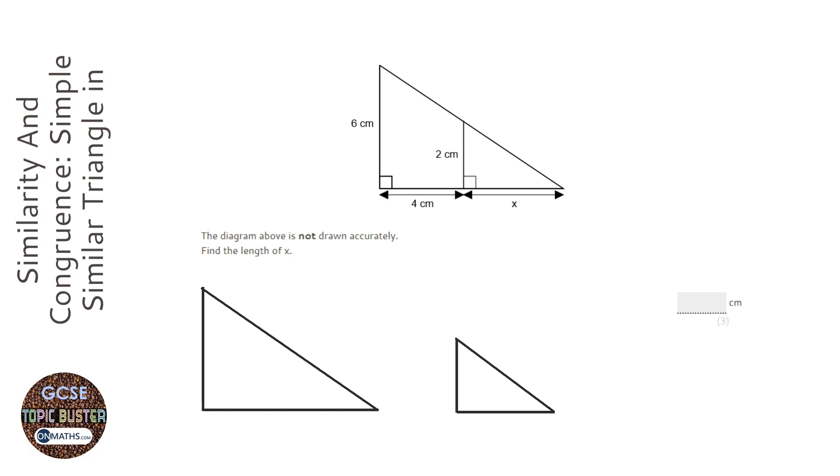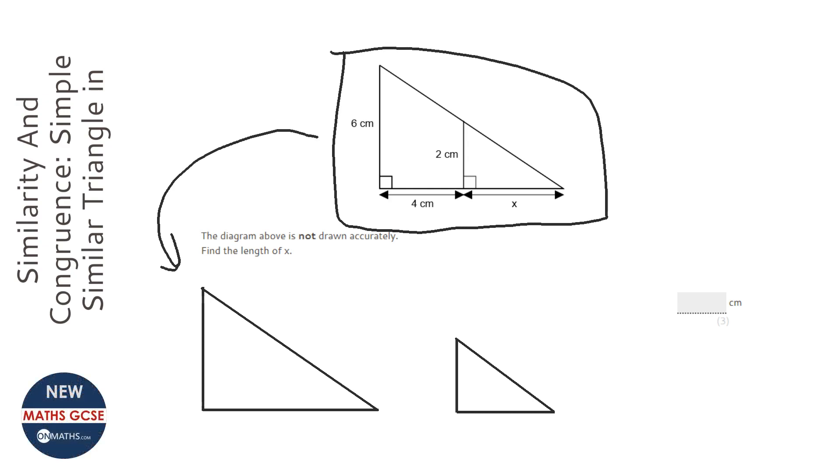Now whenever you see this question here, always just draw it as two separate triangles and try and fill in the lengths. So the small triangle has a height of 2, a right angle here, and a width or a base of x. And the big one has a height of 6. Now the width is going to be x plus 4, and that's going to be key in answering this question.